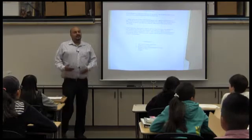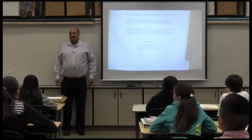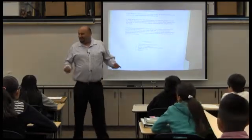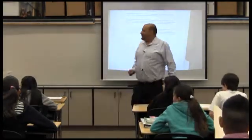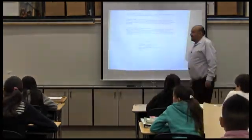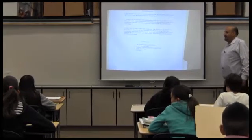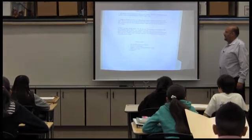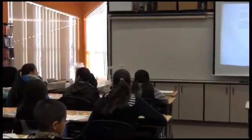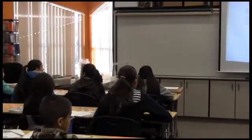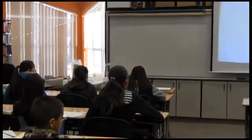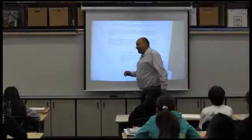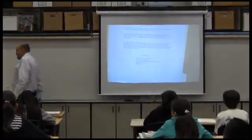Somebody tell me in their own words what are we doing right now. I know the phone was ringing and it was kind of distracting. Marissa, tell me what you're going to do. We're making a tree map with the polygons — we're going to place and classify them and write the properties. And write the properties. So you're going to make a tree map. I'm going to give you a big piece of paper — this is going to be a big tree map.